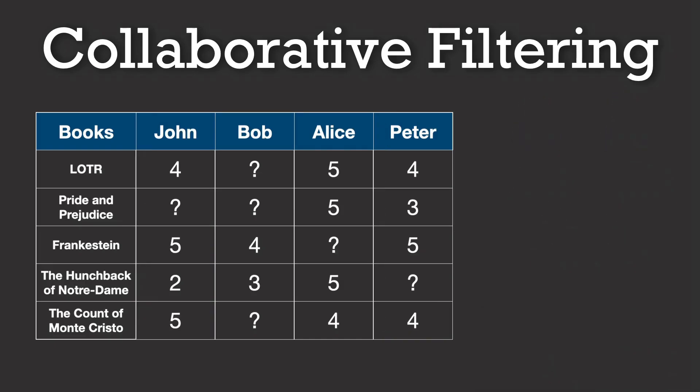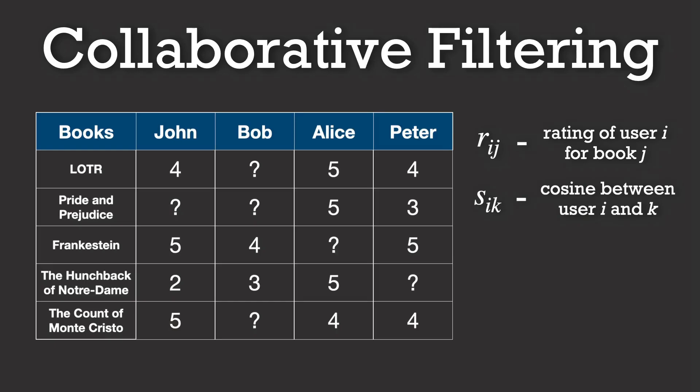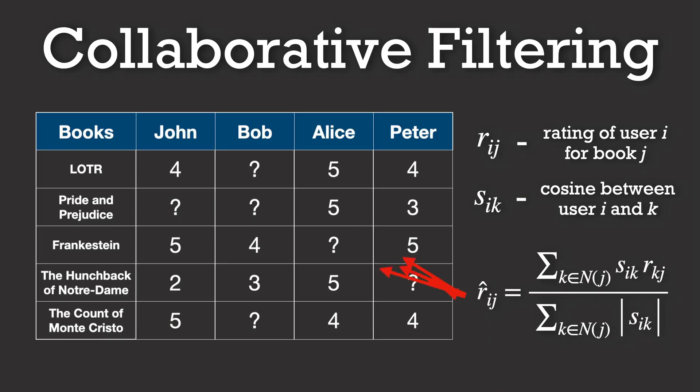In mathematical terms, we define the rating of user i for book j as Rij, and the similarity between user i and another user k as Sik. Then, predicting the rating for user i on book j can be computed by summing the products of Sik and Rkj over all users k who rated book j, and then dividing by the sum of the absolute similarity scores to normalize the result.